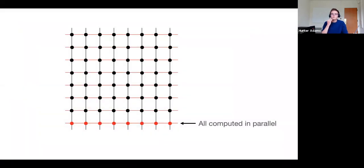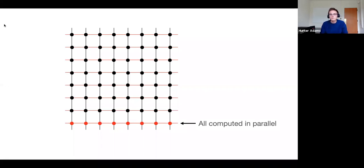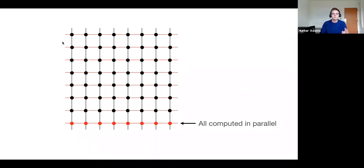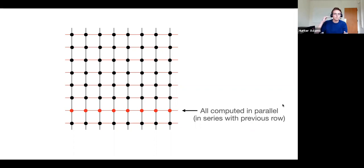I'll remind folks that there are other methods for parallelizing this equation and you're free to do any method. If you want to do arrays of tiles of nodes instead of columns, that's fine. I'm presenting this one because it has produced the largest drums, so it seems like the right one to present. I'm going to start going through some of the material we've seen before and then get into the new stuff.